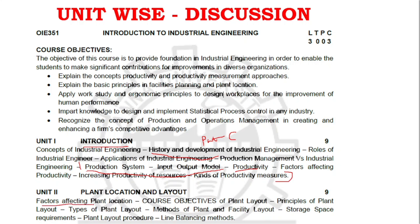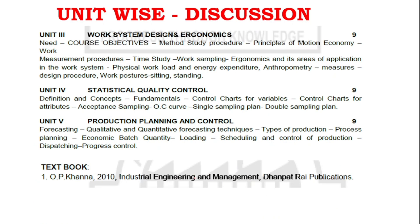Moving to unit two: factors affecting plant location is important. Under plant layout — principles, types, and methods of plant layout are the three key themes to cover. The plant layout procedure is also important, and covering these topics is more than enough for unit two.